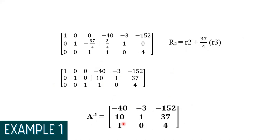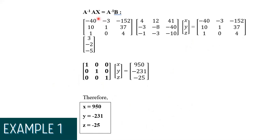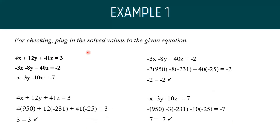After getting the inverse of A, we multiply it to our equation AX equals B to get the values of our unknowns. After multiplying both sides by the inverse of A, we get the identity matrix on the left side and the vector of unknowns equals the constants 950, negative 231, and negative 25. So x equals 950, y equals negative 31, and z equals negative 25. To check, we can plug in the answers and confirm the values are correct.